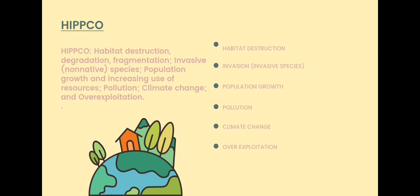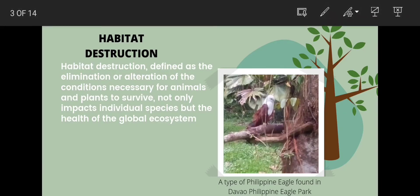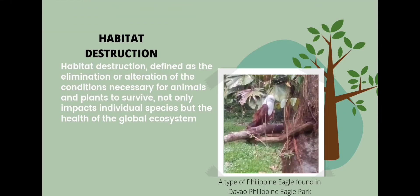What is habitat destruction? Habitat destruction is defined as the elimination or alteration of the conditions necessary for animals and plants to survive. It not only impacts individual species but the health of the global ecosystem. It is also called habitat loss — the process by which a natural habitat cannot support its own native species.